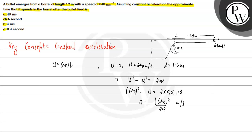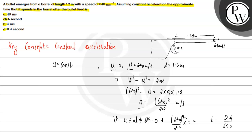Now we find the time spent in the barrel. Final velocity is known, initial velocity is known, acceleration is known. Using v equals u plus at: 640 equals 0 plus acceleration times time. Substituting acceleration as 640 squared divided by 2.4, the 640 cancels and time equals 2.4 divided by 640.